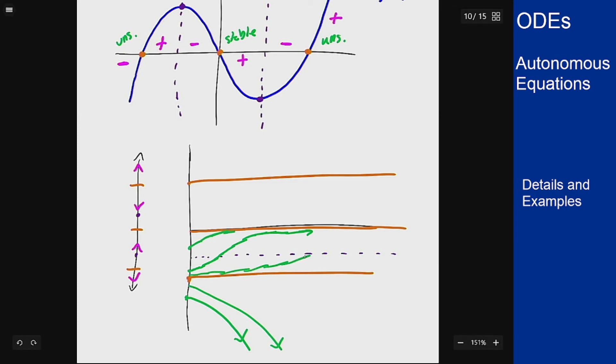We'll come out, be concave up, hit this line, flip to being concave down, and then we'll go forward that way.